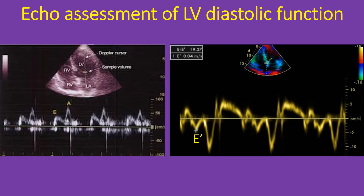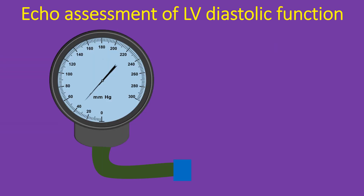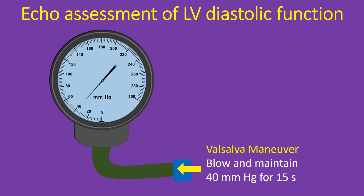Though there are several parameters for evaluation of left ventricular diastolic function by echocardiography, the most commonly used are the Pulse Doppler Mitral E by A ratio and Tissue Doppler Mitral E by E prime ratio. Some of the other useful parameters are Mitral E velocity deceleration time, changes in Mitral inflow with Valsalva maneuver, Mitral L velocity, isovolumic relaxation time, left atrial maximum volume index, pulmonary vein systolic by diastolic velocity ratio, Mitral color M-mode Vp and E by Vp ratio.